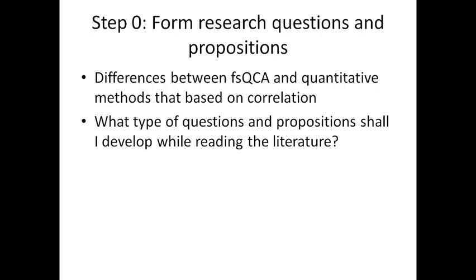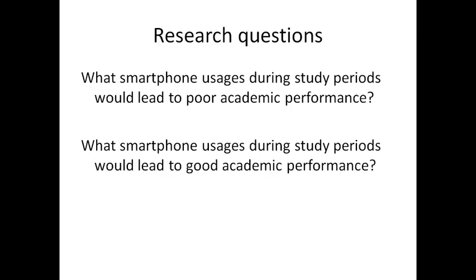For example, let's look at these two questions. Question one: what smartphone usages during study periods will lead to poor academic performance? Question two: what smartphone usages during study periods will lead to good academic performance? If you're using correlation-based methods, you really just need to ask the first question, because the answer simultaneously generates the answer to the second. However, in FSQCA, that is not the case — your answer to the first question might be totally different from the answer to the second.